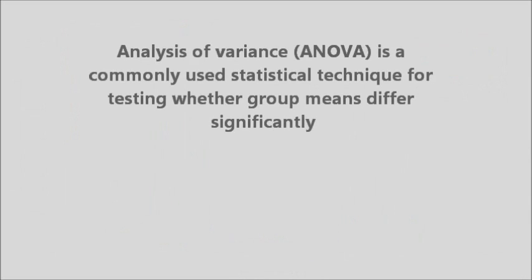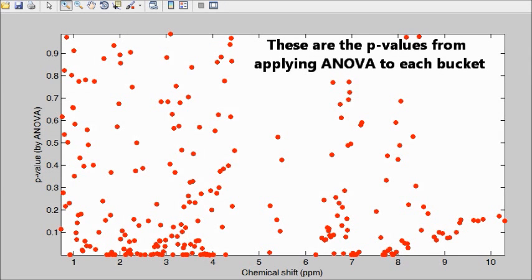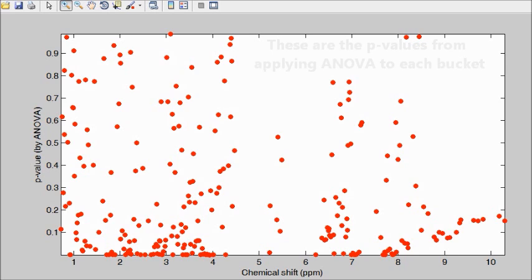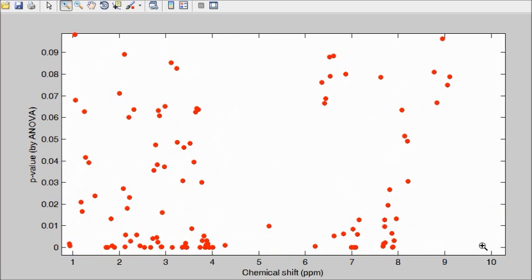A well-known statistical method for treating this kind of problem is analysis of variance, or ANOVA. These are the p-values obtained from applying ANOVA to each bucket in turn. These are intended to represent how likely it is that there is no significant difference between the means of each group. Only very small p-values are of interest. By zooming in, we see that there are quite a lot of metabolites which have p-values less than 0.01.